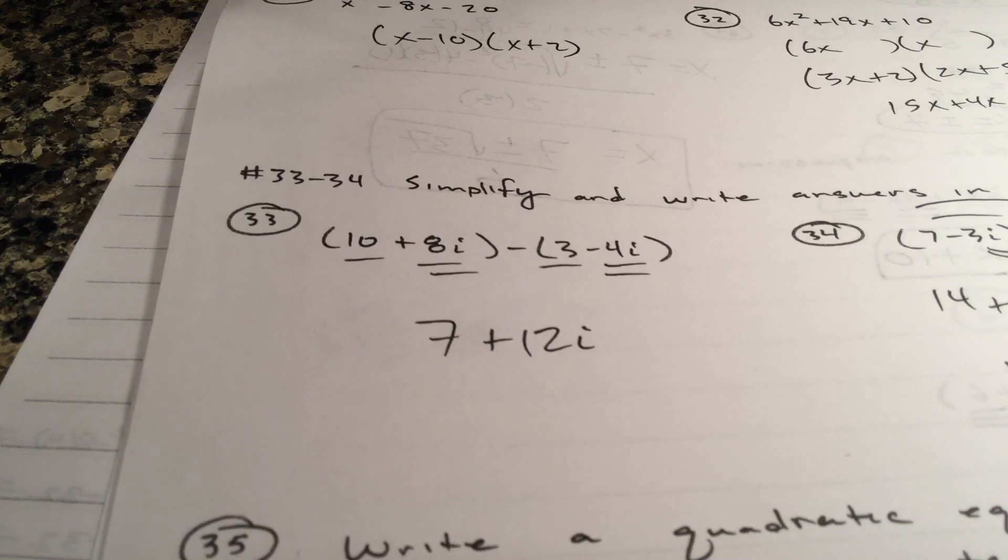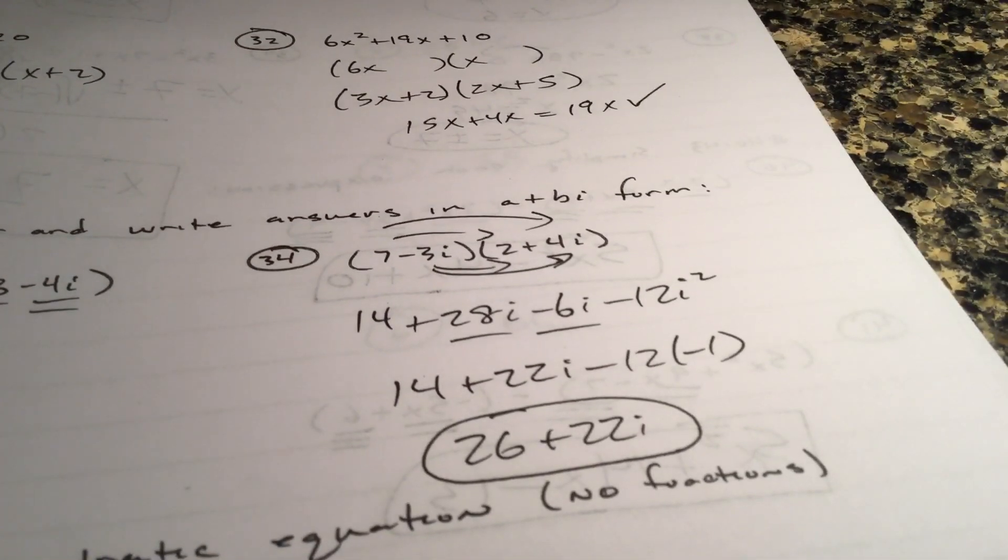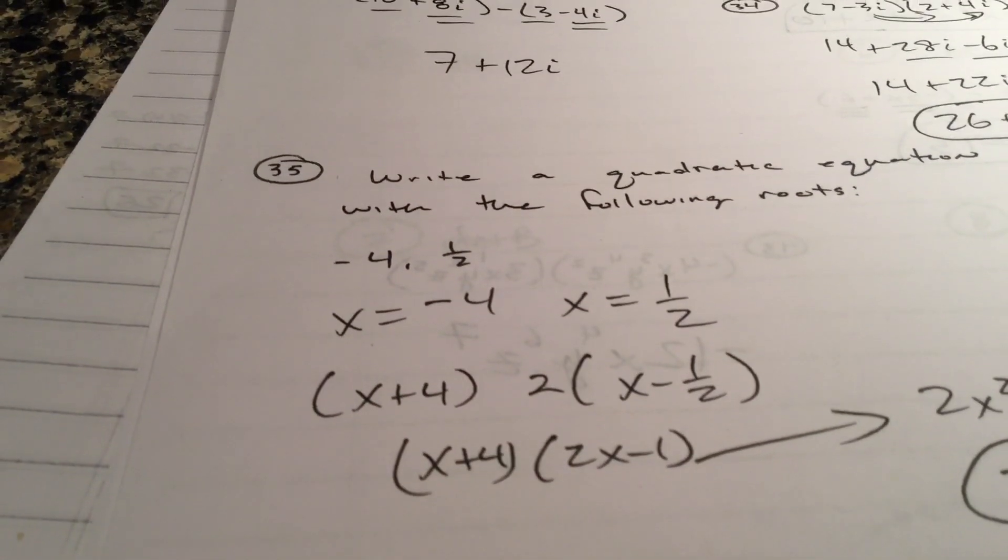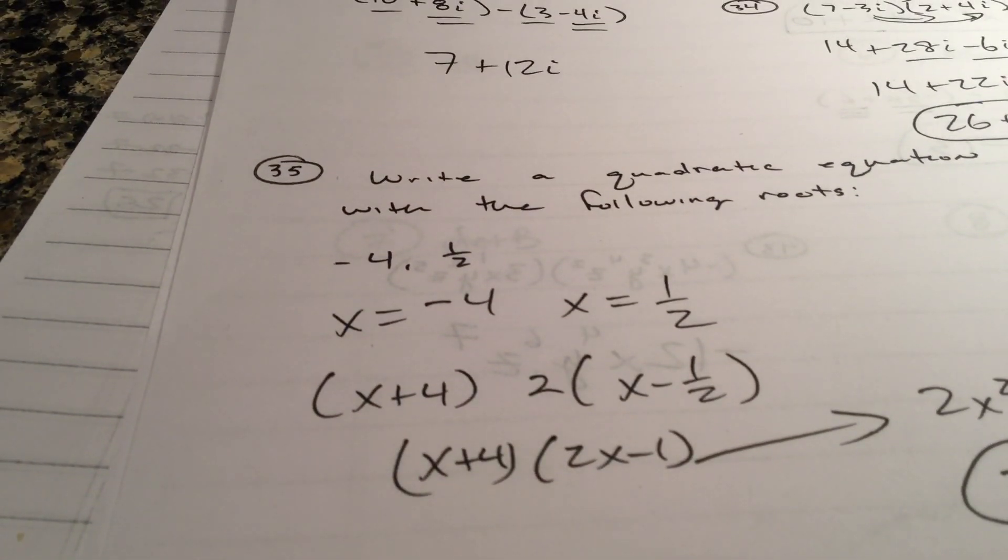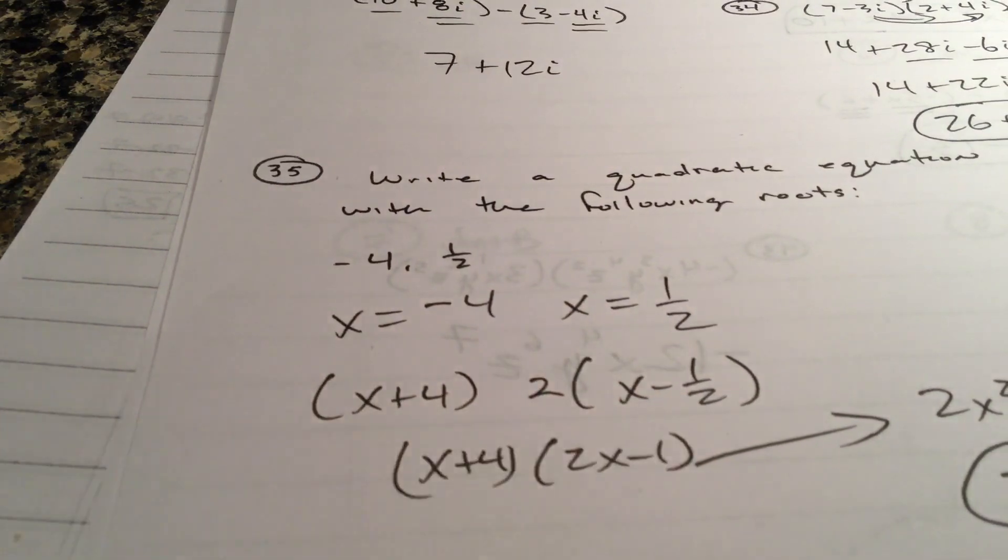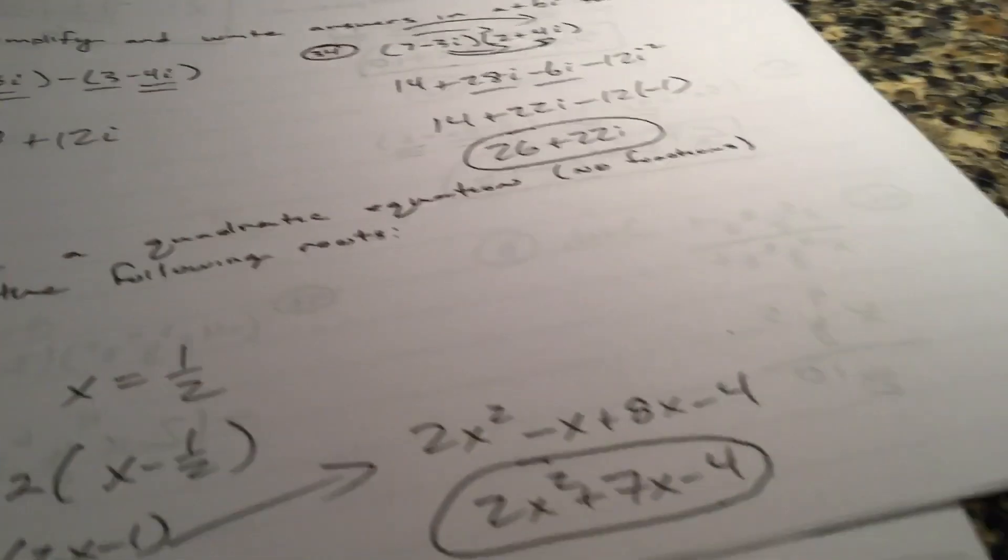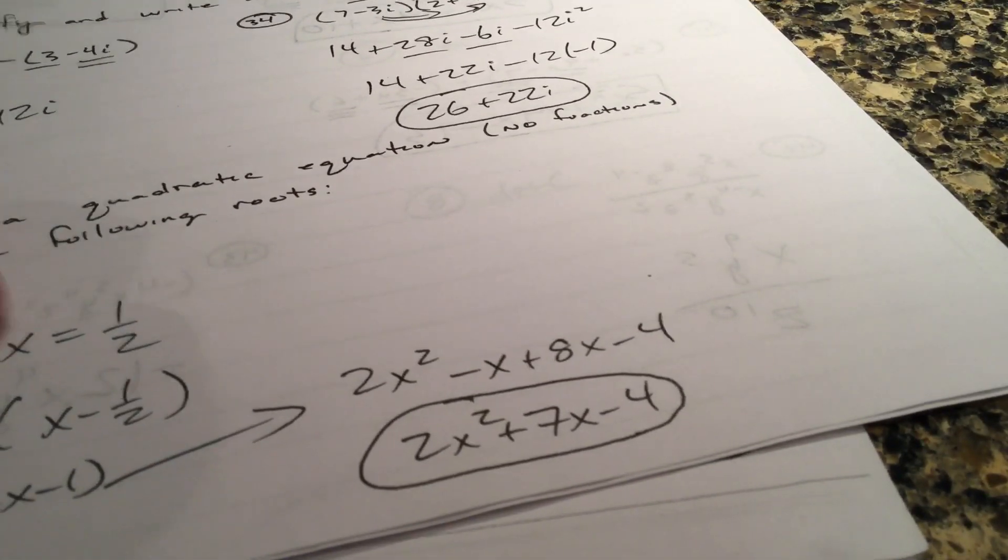All right, write an a plus bi formula. You're simply subtracting like terms. First outer inner last, let's foil it. i squared is a negative one, so 26 plus 22i. 35 would definitely be on your final. So if x equals negative four and x equals one-half, you have x plus four times x minus one-half. You're not allowed fractions or decimals. So then double this one to get rid of the two, and then just foil.